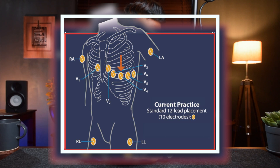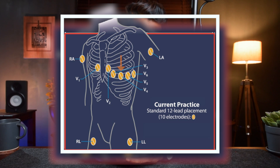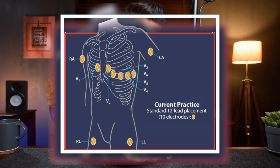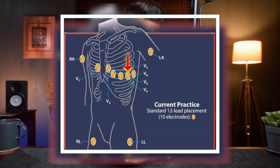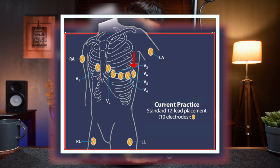You don't place V3 first; rather, you place V4, which is at the 5th intercostal space in the mid-clavicular line, and then you place V3 in between V2 and V4. V5 is placed at the 5th intercostal space at the anterior axillary line. V6 is placed at the 5th intercostal space in the mid-axillary line.